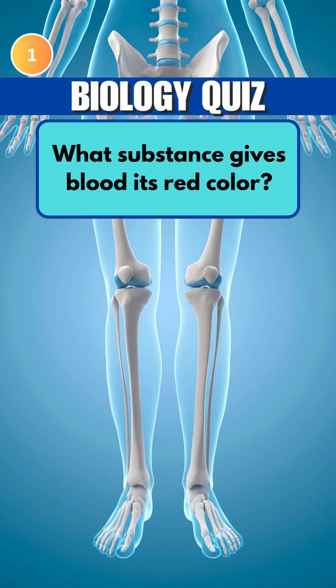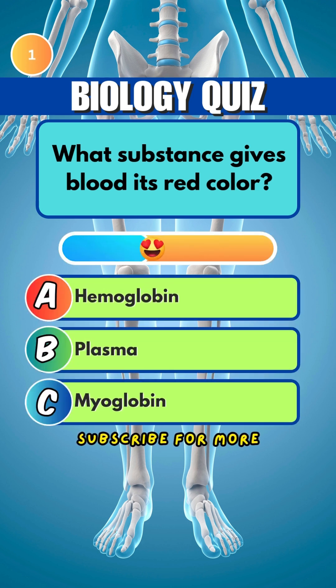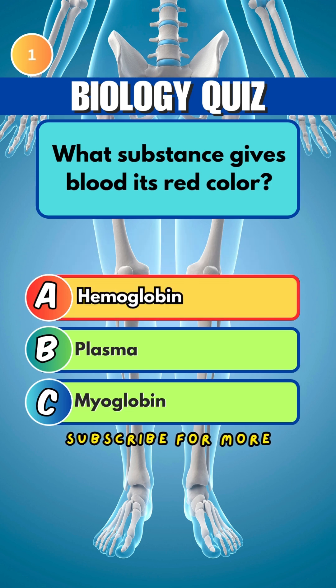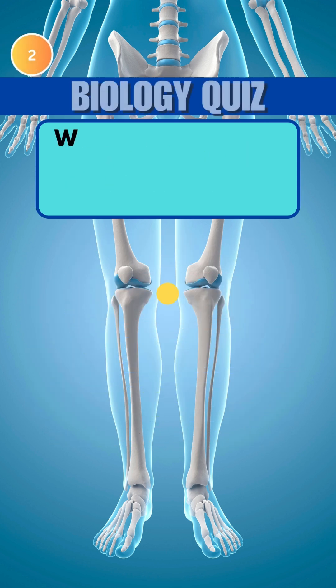What substance gives blood its red color? Answer: A. Hemoglobin.